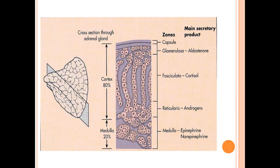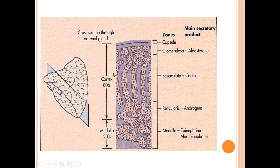The adrenal cortex synthesizes three different types of steroids: aldosterone from the zona glomerulosa, cortisol from the zona fasciculata, and androgens from the zona reticularis. The medulla is composed of chromaffin cells which synthesize and secrete catecholamines, mainly epinephrine. The cortex constitutes about 80 percent and the medulla about 20 percent of the total adrenal gland.